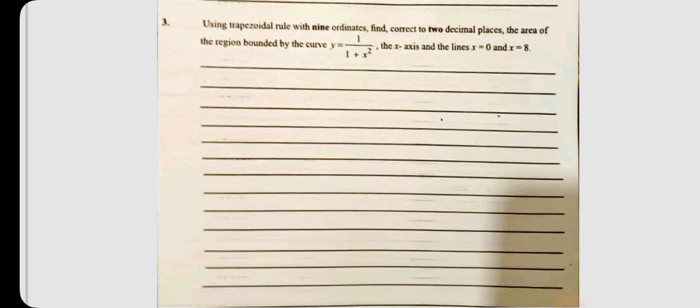Using the trapezoidal rule with 9 ordinates, find correct to 2 decimal places the area of the region bounded by the curve y equals 1 over 1 plus x squared, the x axis and lines x equals 0 and x equals 8.